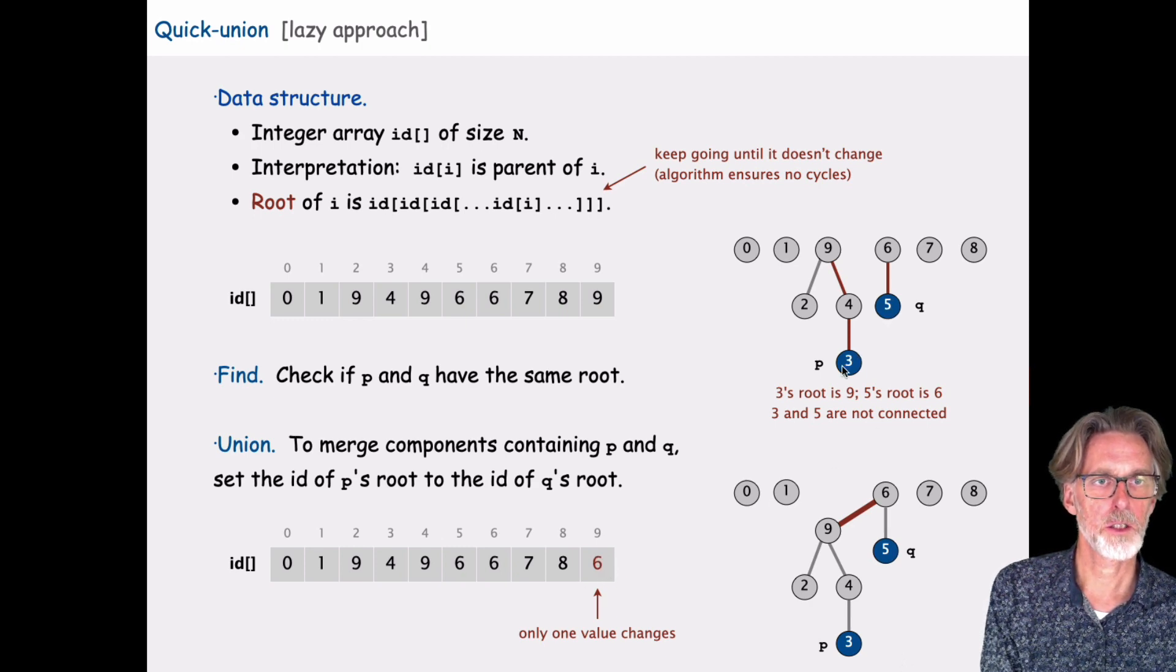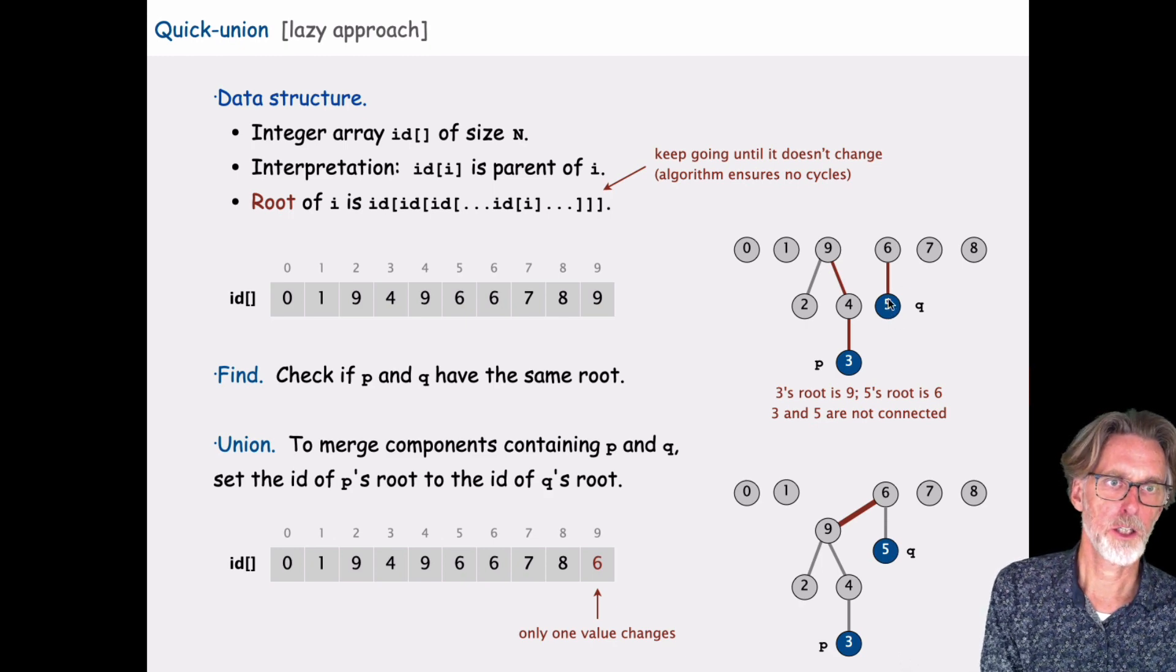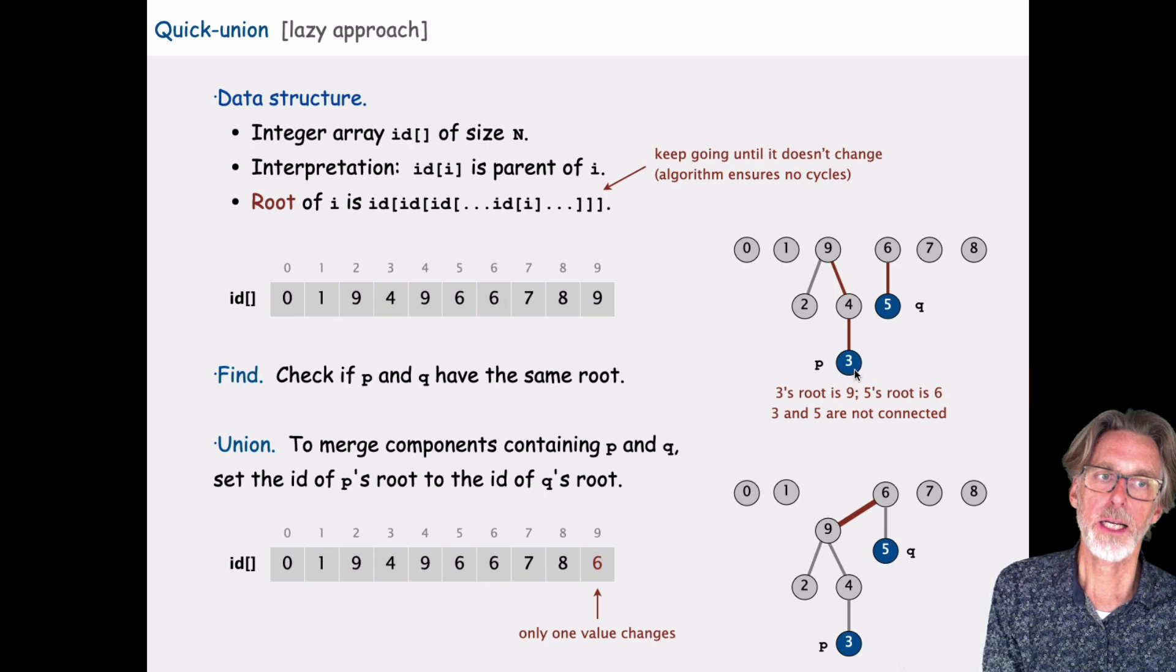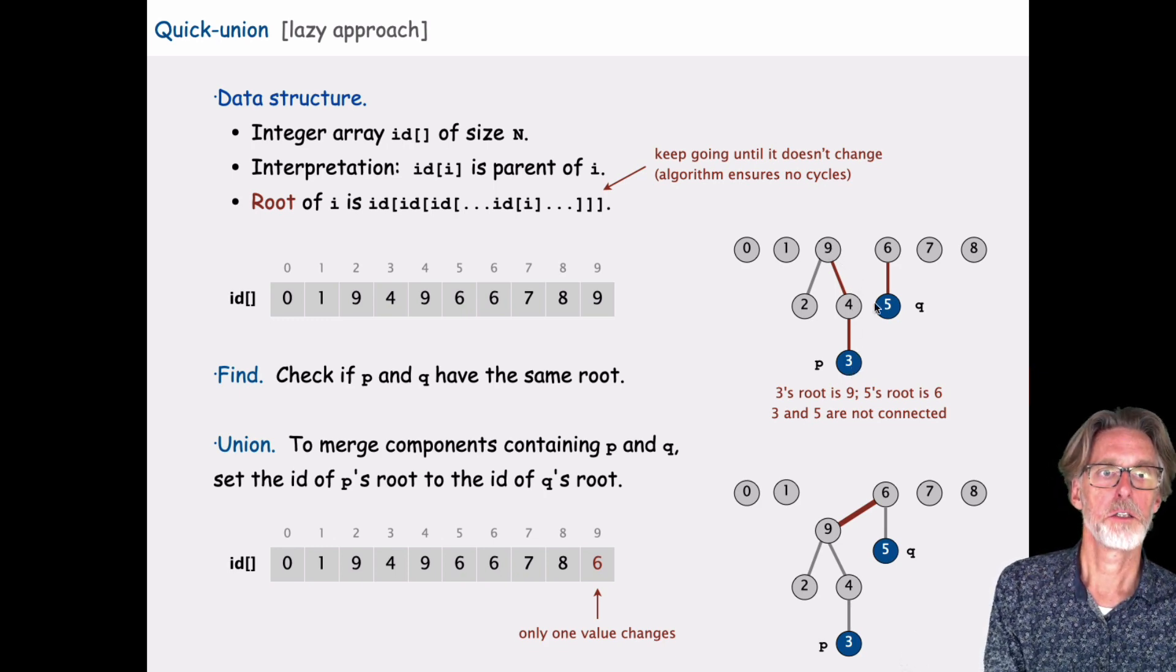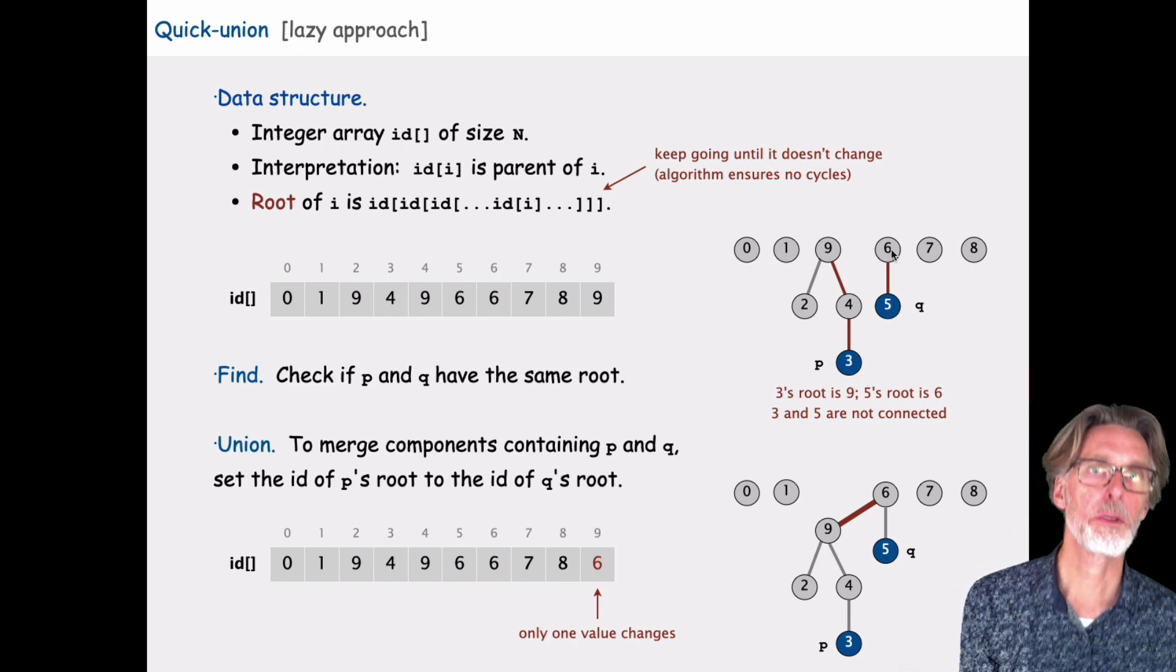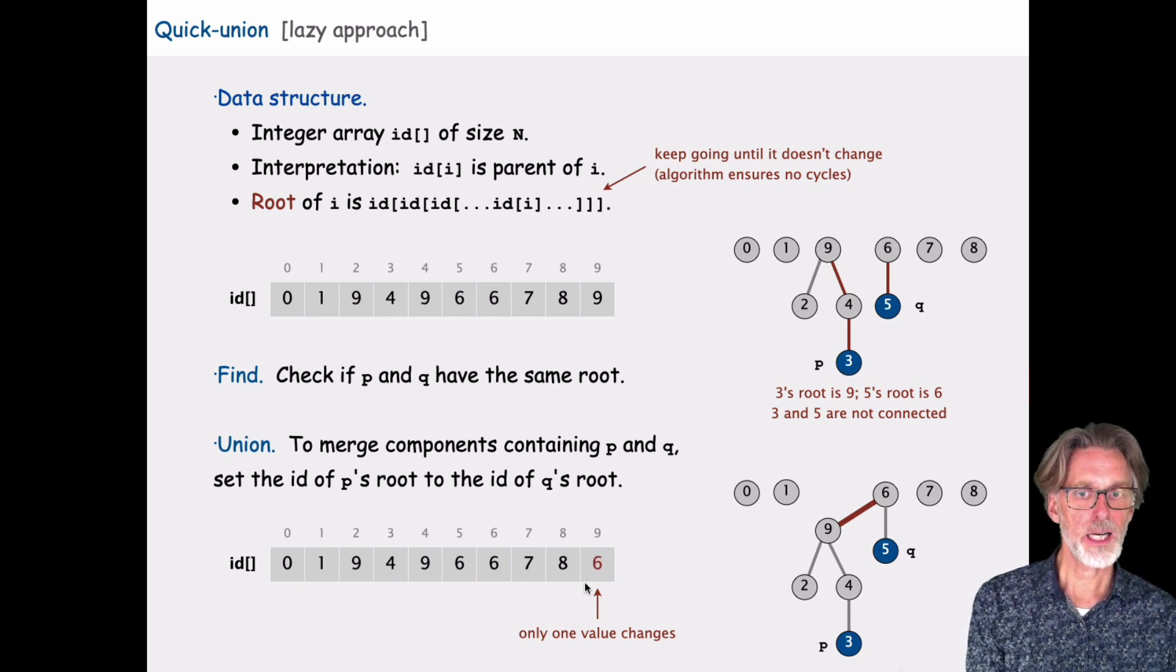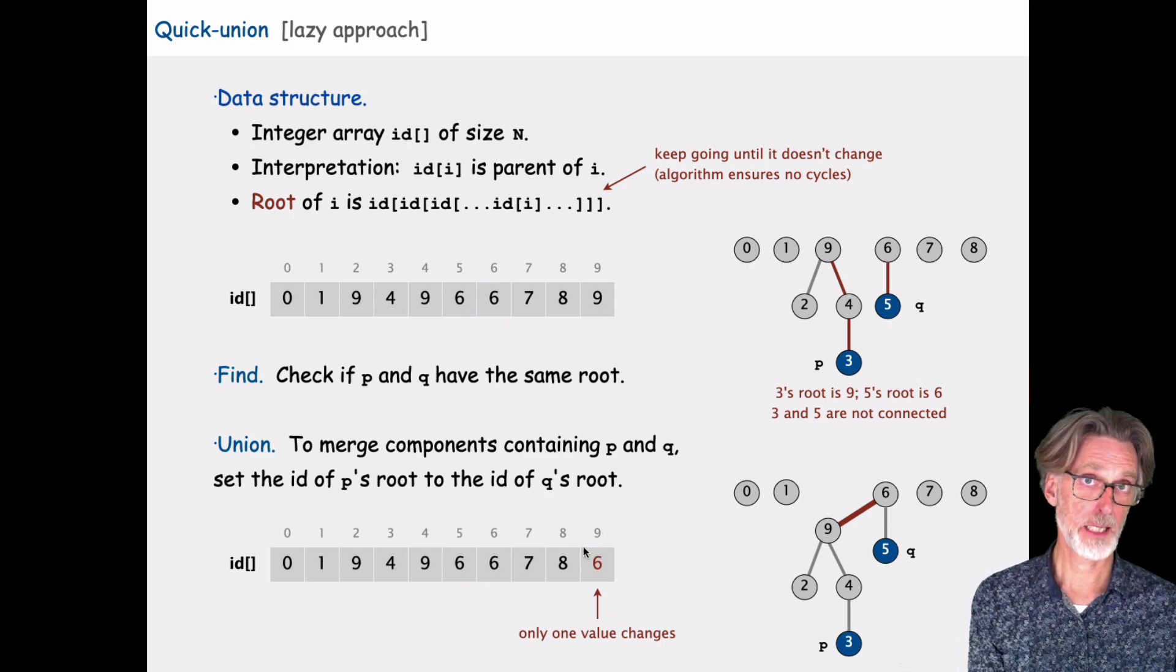So here, if I'm going to union 3 and 5, 5 here has champion 6, 3 has champion 9. All I need to do is move 9 to be beneath 6. So we'll take the champion of 3 and put it beneath the champion of 6. So we're only going to update one element of the array, which is, in this case, at index 9.